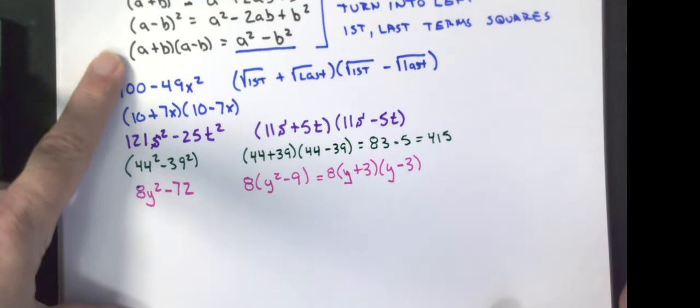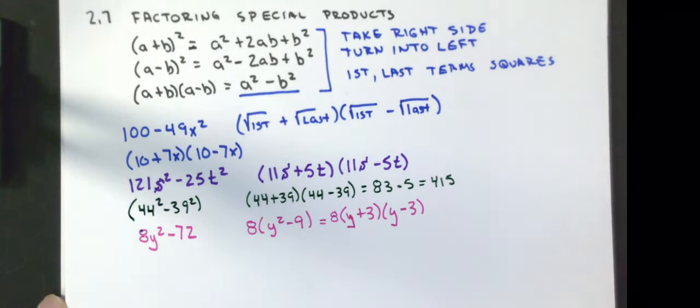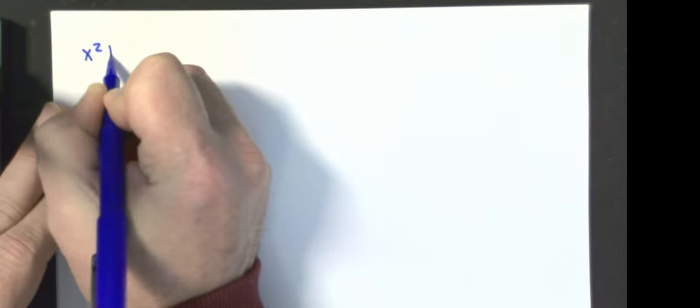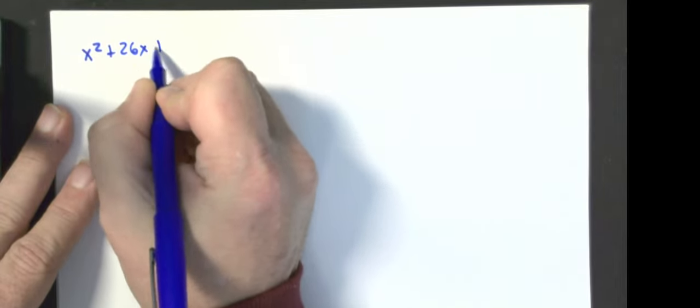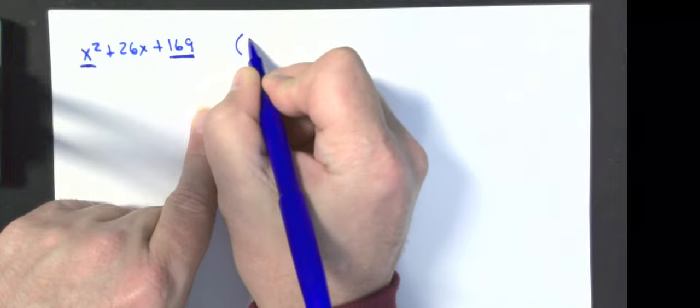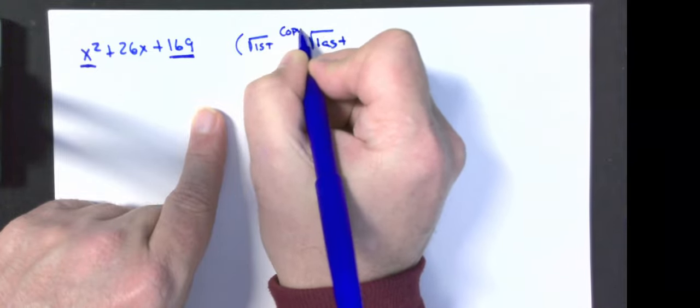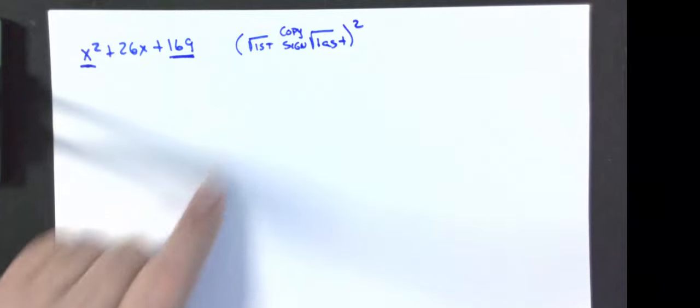That's what they call the difference of squares pattern. Now we're going to do the perfect square trinomials. The first example is x² plus 26x plus 169. Since both the first and last terms are perfect squares, we take the square root of the first, the square root of the last, copy the sign, all squared. The process is: square root of the first, square root of the last, copy the sign, all squared.